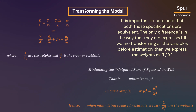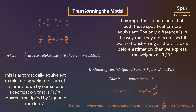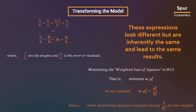It is important to note that both these specifications are equivalent — the only difference is in how they are expressed. If we are transforming all the variables before estimation, then we express the weights as 1 over X. This is automatically equivalent to minimizing the weighted sum of squares shown by the second specification, that is, 1 over X squared multiplied by squared residuals. These expressions look different but are inherently the same and lead to the same results.